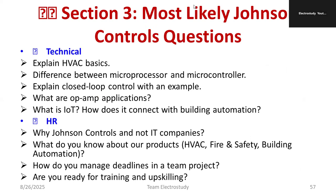In Part 3, here are important repeated questions for Johnson Controls specifically: explain heating, ventilation, and cooling basics; difference between microprocessor and microcontroller; explain closed-loop control with a suitable example; what are operational amplifier applications; what is IoT and what is its role in building automation? Also prepare: why Johnson Controls and not an IT company — you need to justify.